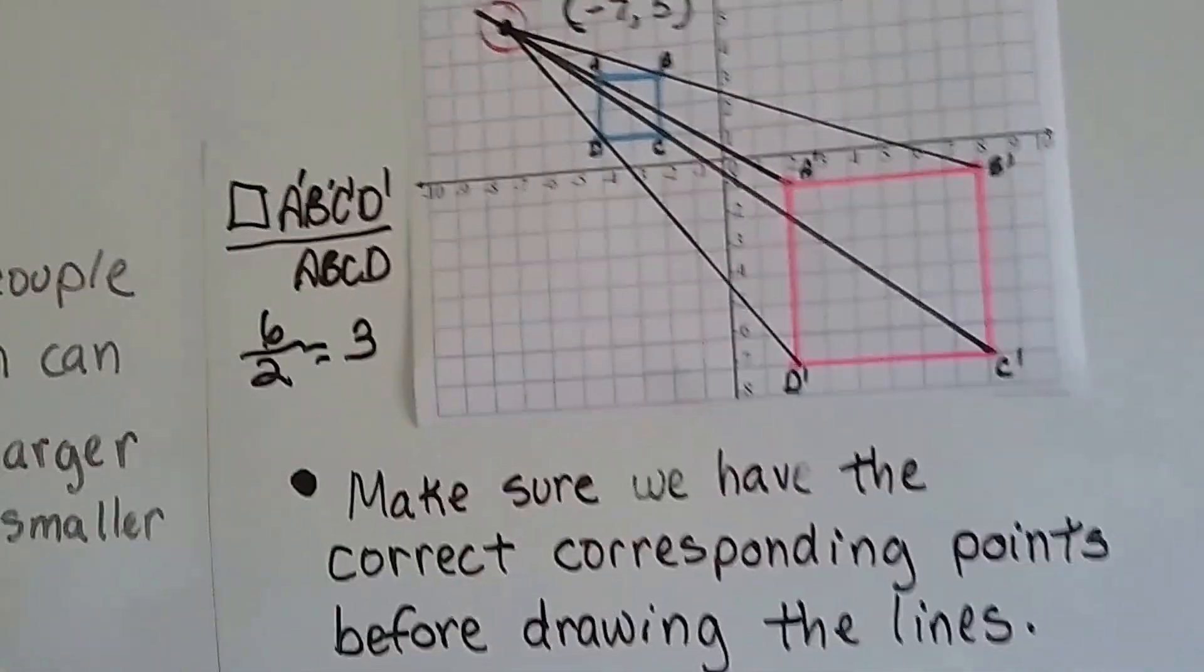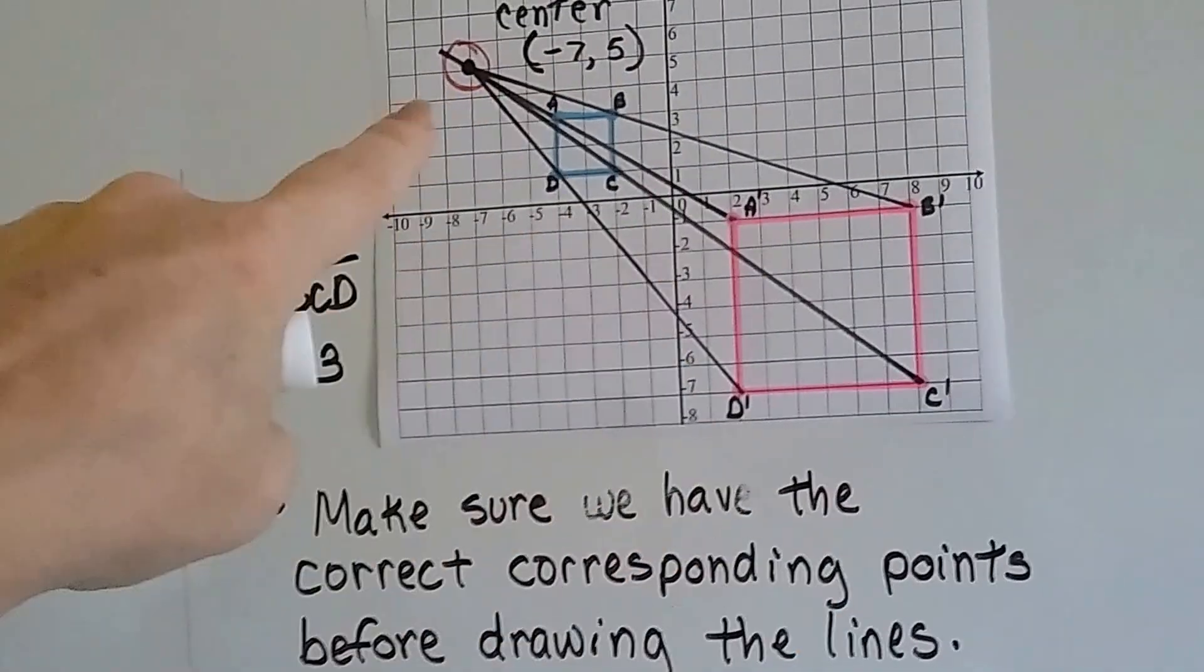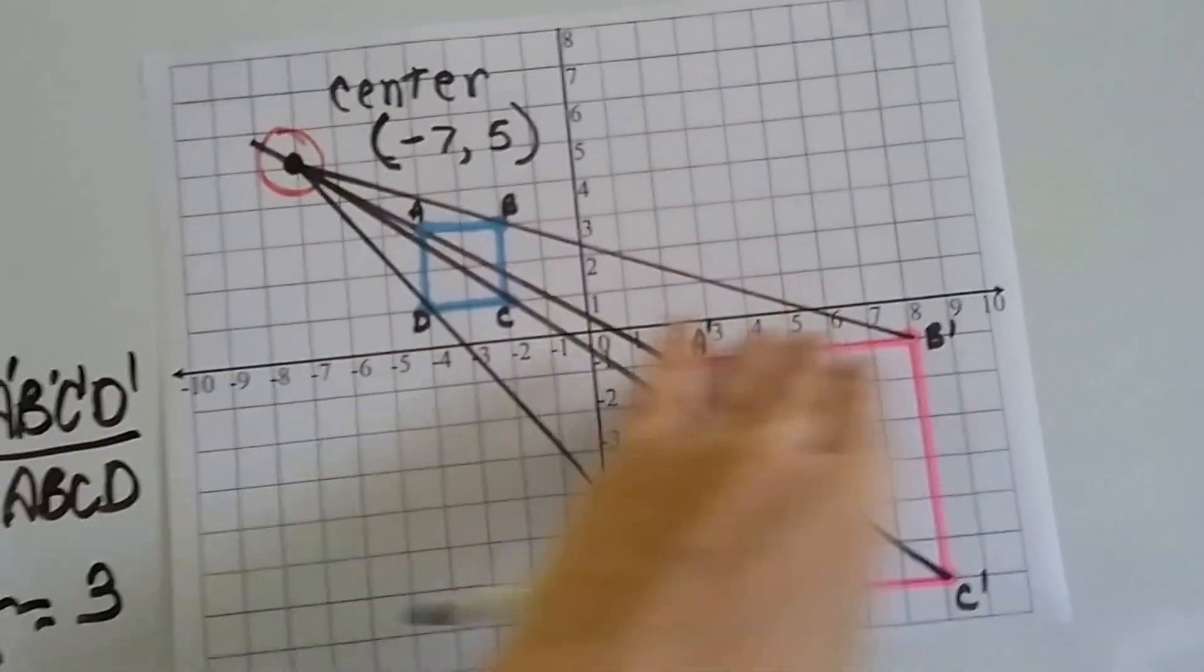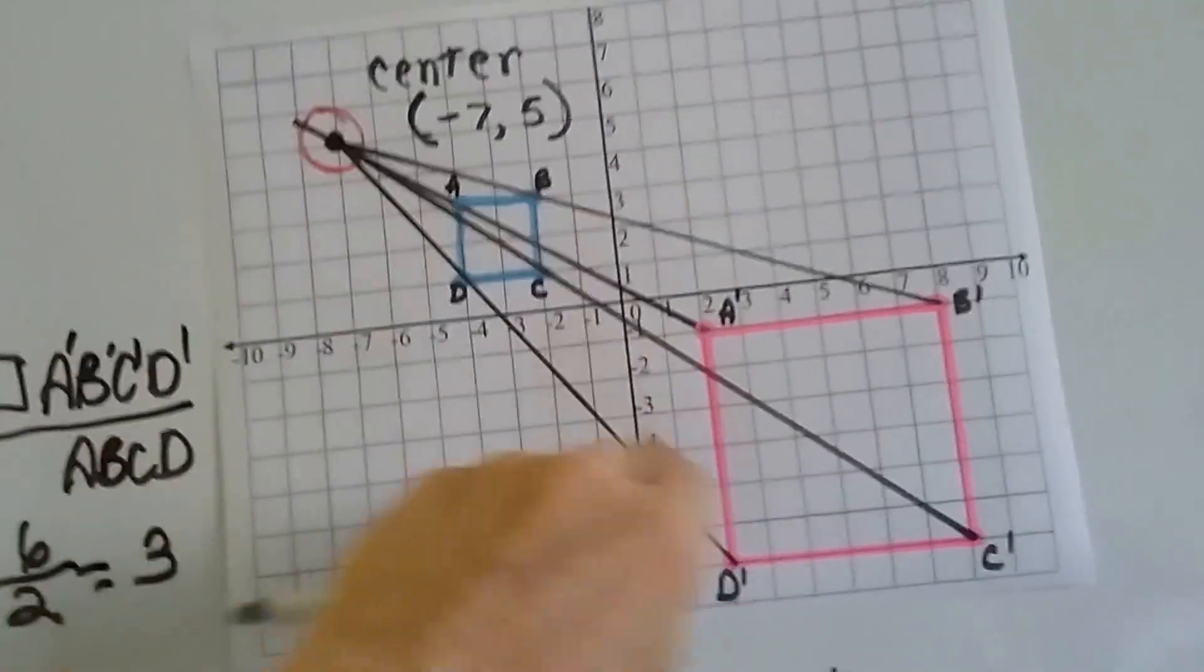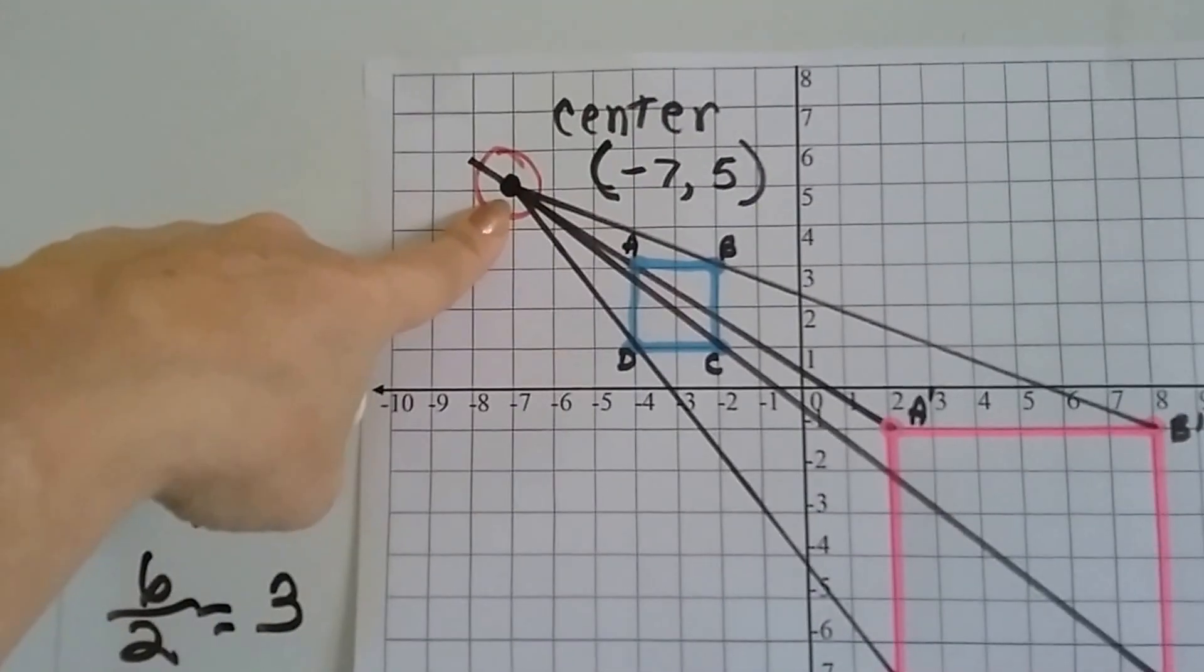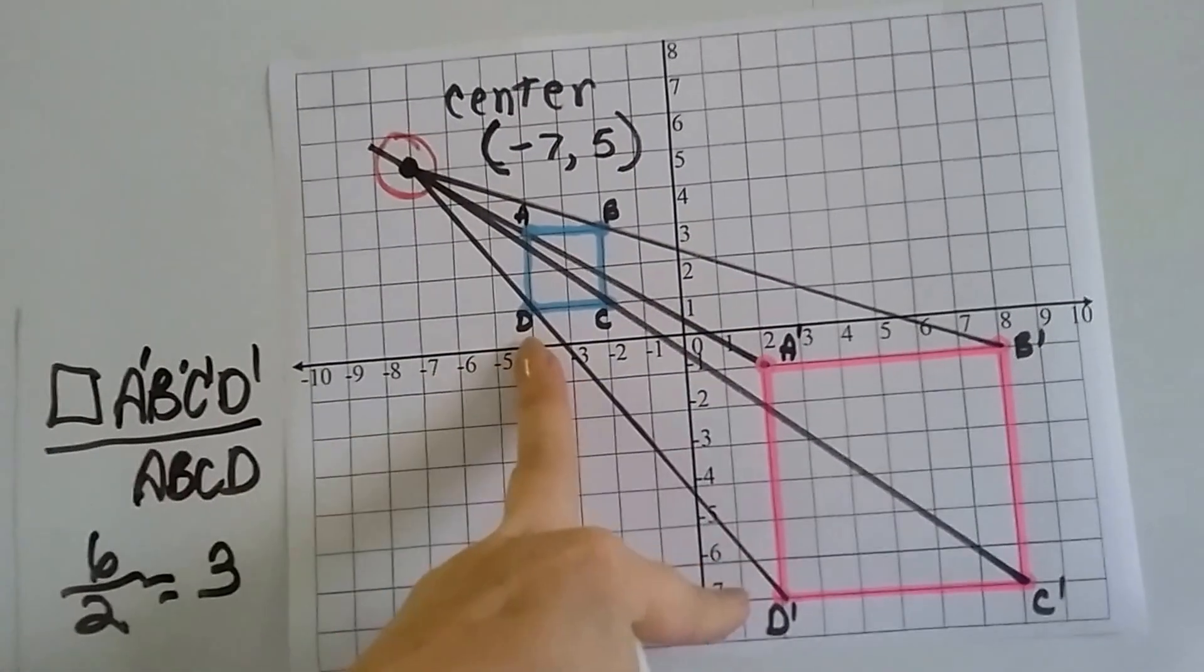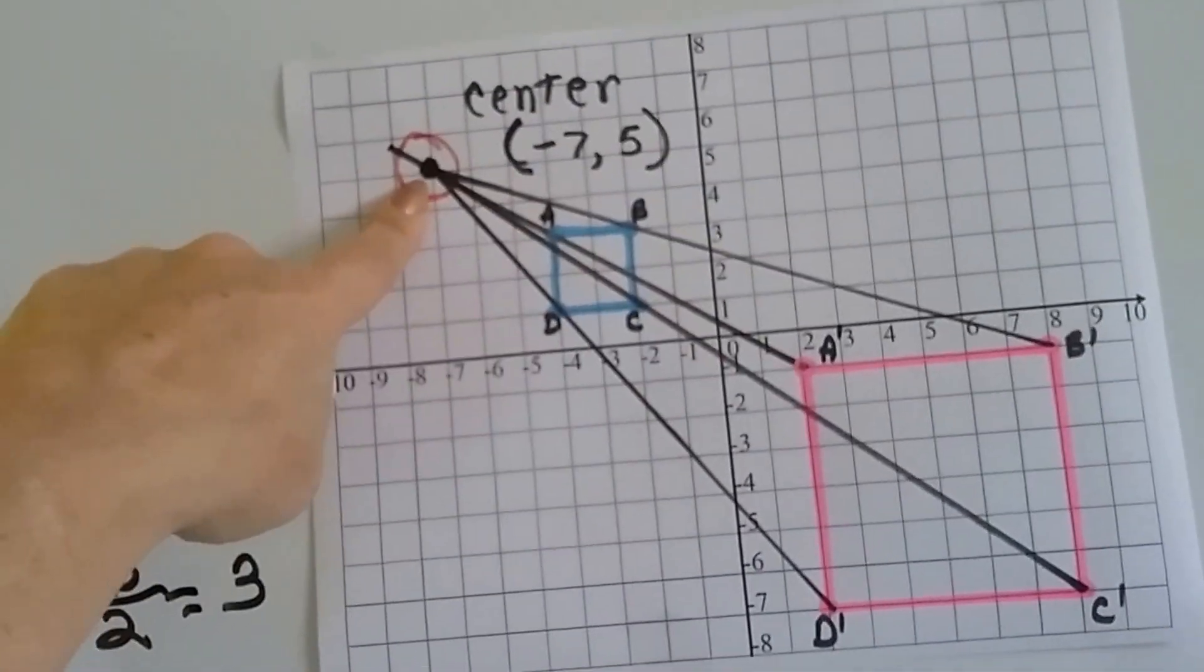We have to make sure that we've got the correct corresponding points before we draw these lines. You want to make sure that you're connecting a to a prime and b to b prime. We connect c to c prime and d to d prime. Where all of the lines meet is the center of dilation. So this is negative seven on the x and five for the y.